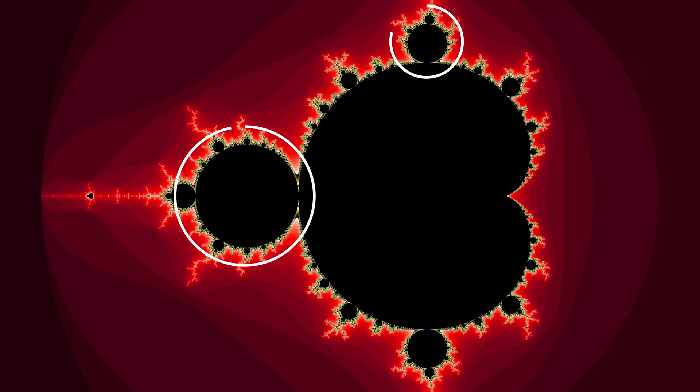So if you go through the Mandelbrot set and you start with these two components, the 2 and 3 component, and you look between them for the next biggest component, the next biggest one will be the next Fibonacci number.